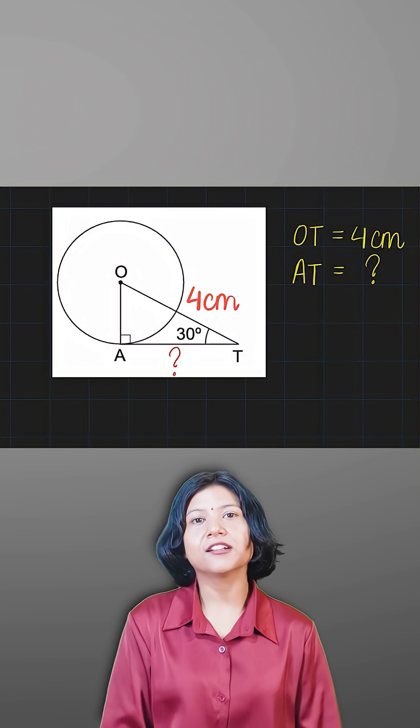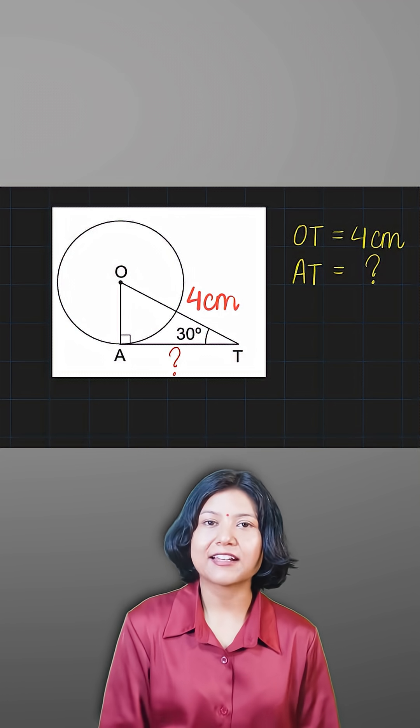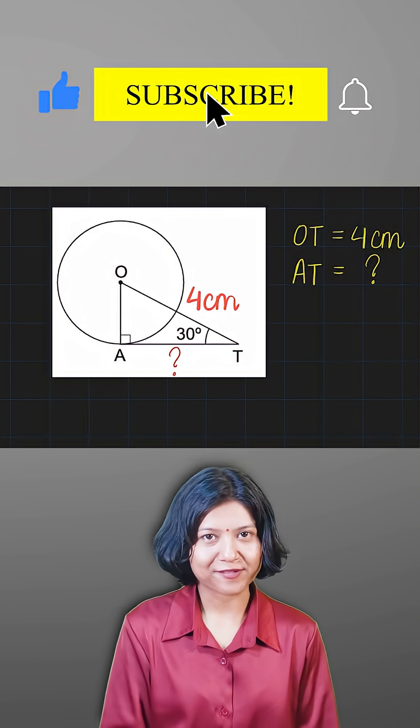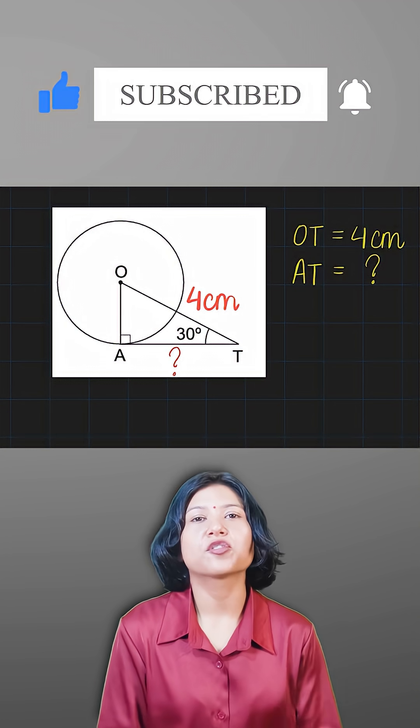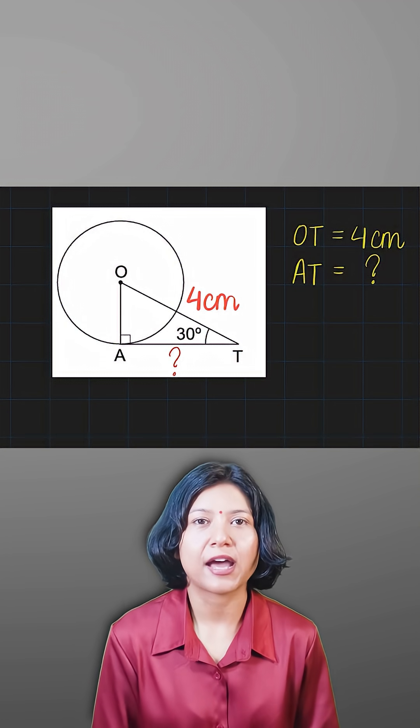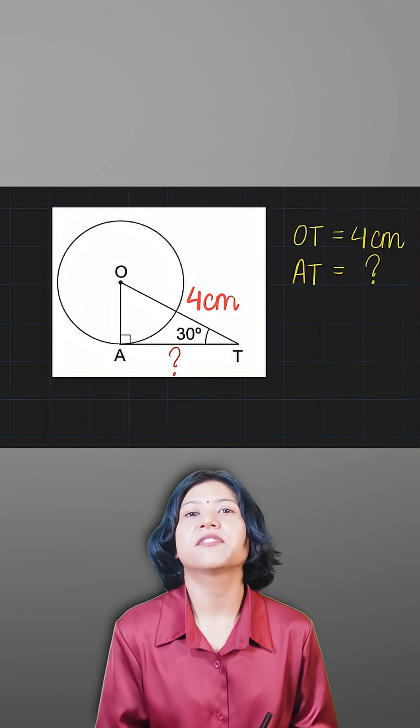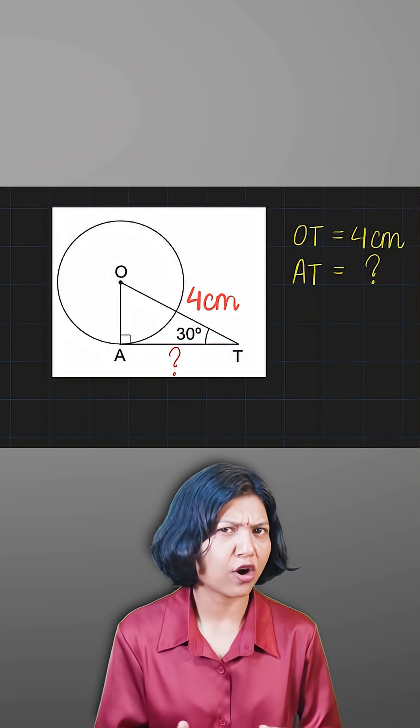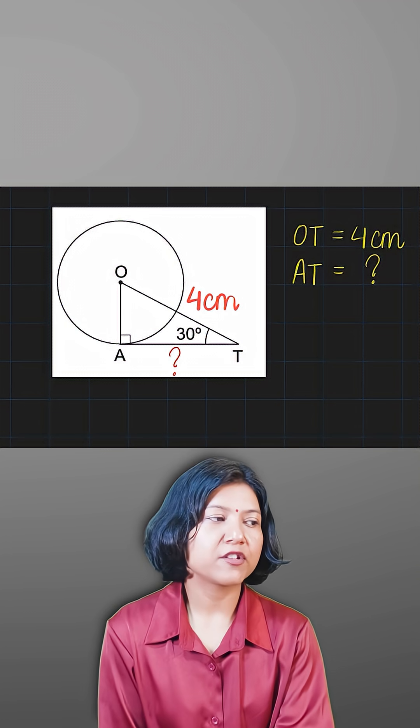Remember one thing: when you see an angle and you're supposed to find the side, that is when trigonometry enters. What I mean by that is you have to always use trigonometry when you have an angle and with the help of an angle you want to find the side, or vice versa. So you see, the angle has been given to me - 30 degrees.